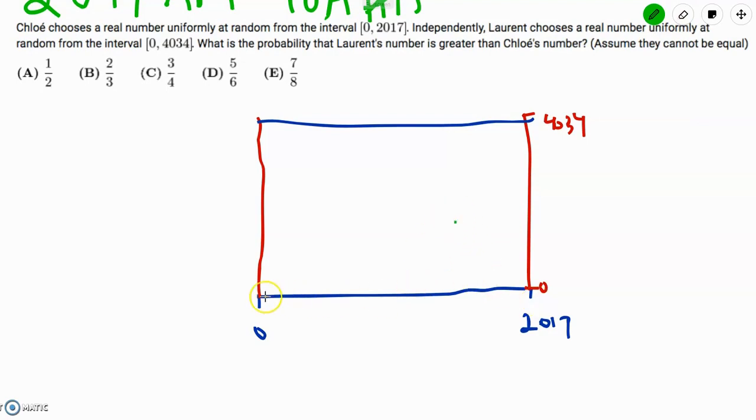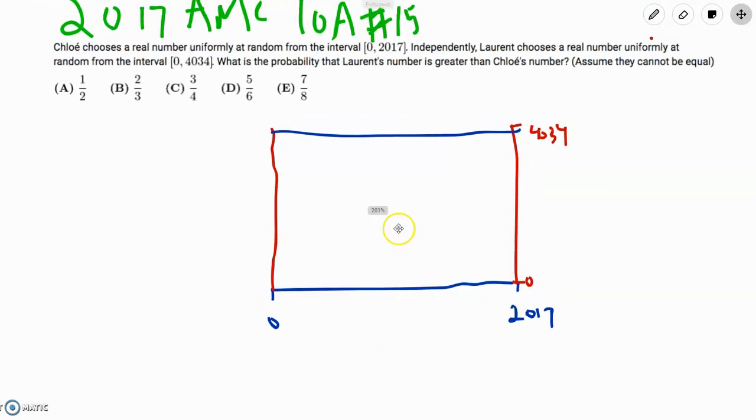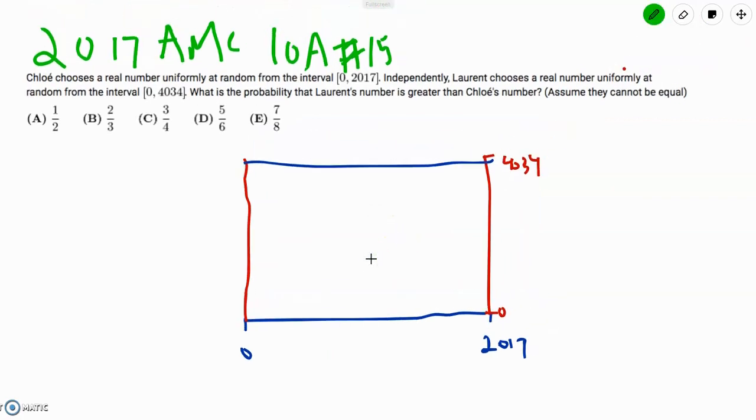And so what we see here is that if you pick any point along this sort of grid, if you pick any point here, the x part will be Chloe's number, and the y part will be Laurent's number. So we essentially created an x, y coordinate system, where we can now do calculations. Remember, since there are infinite possibilities, we want to find probability regions, not just a count of the numbers.